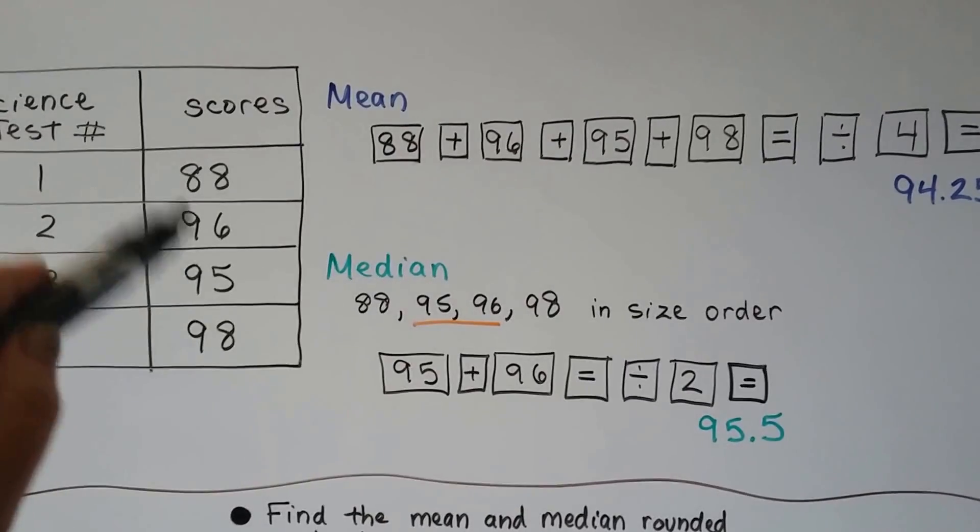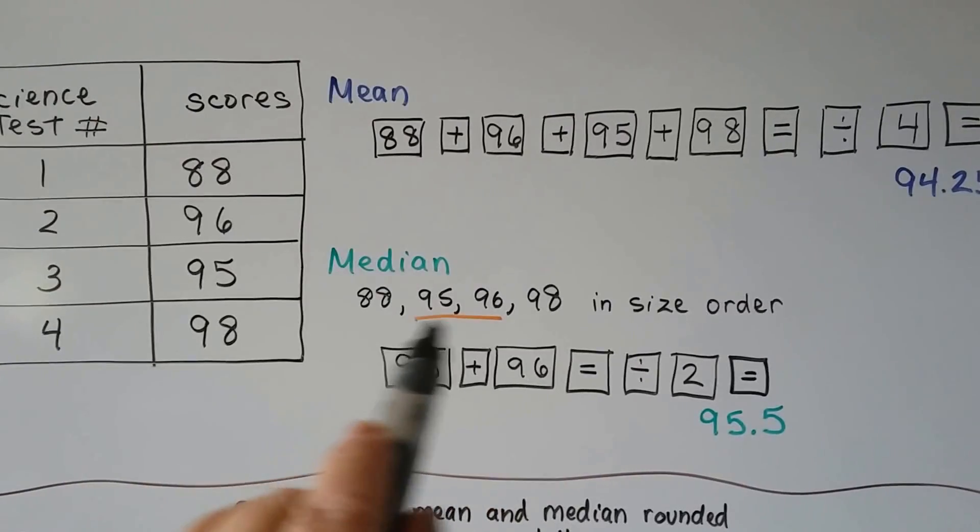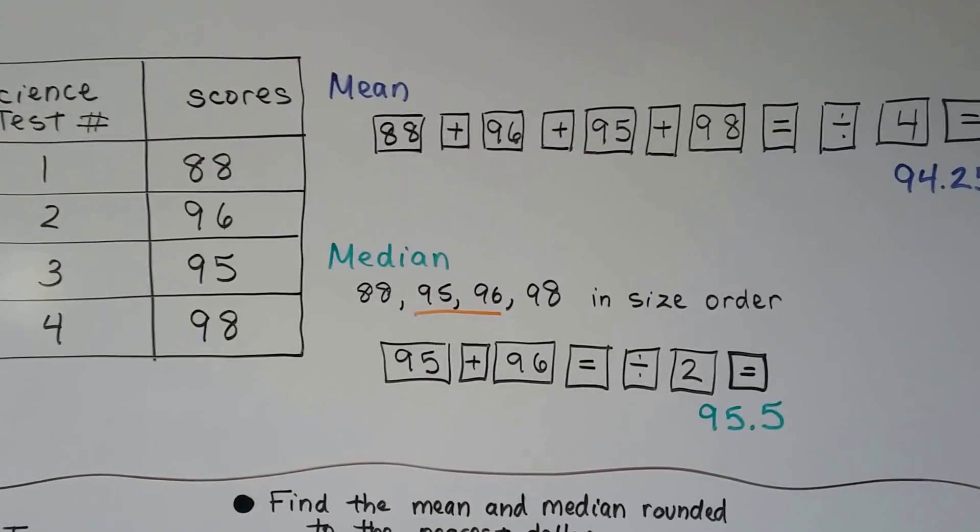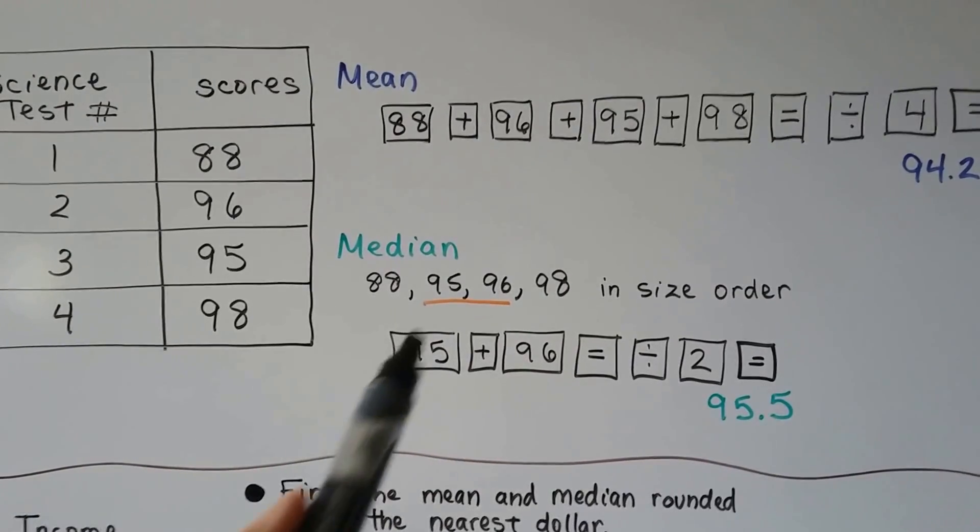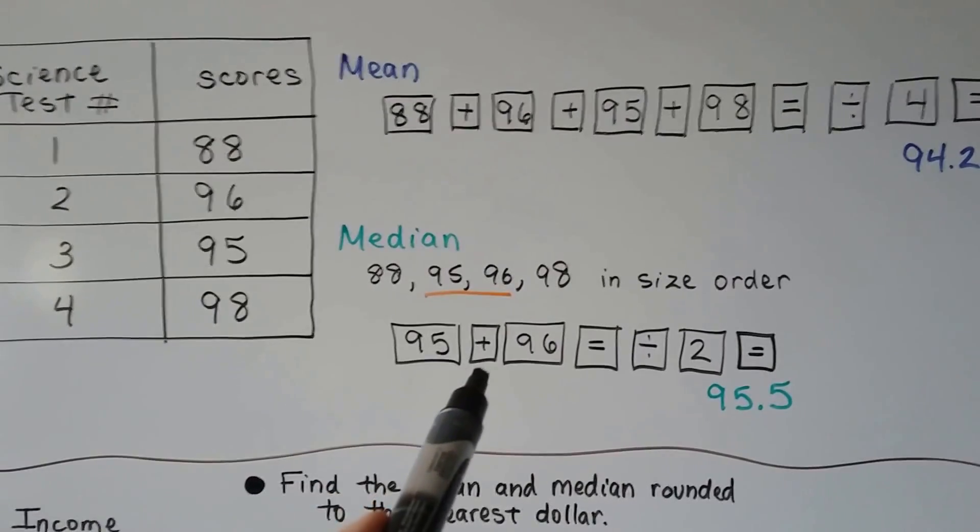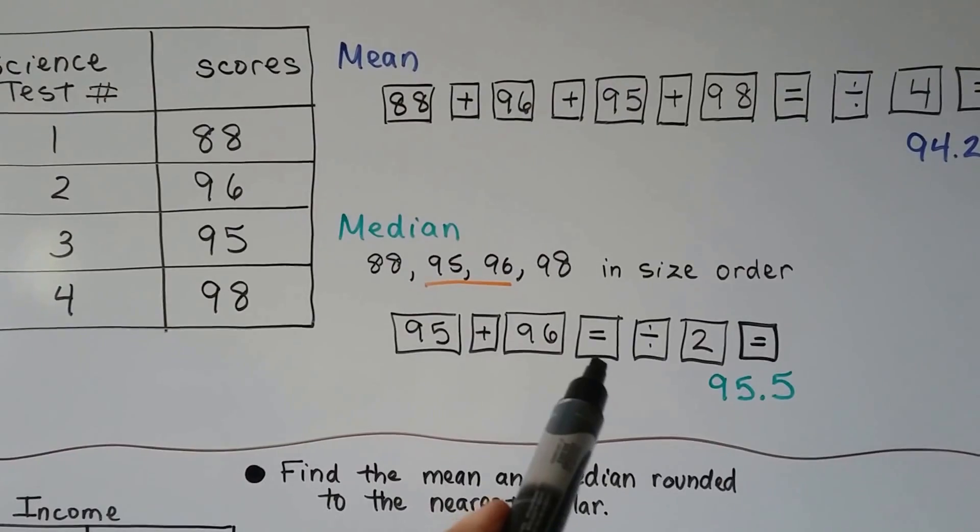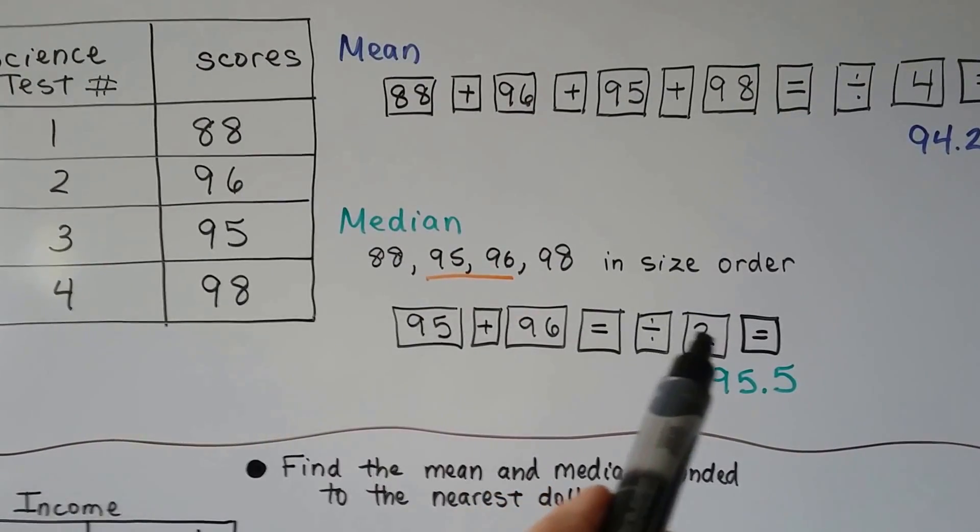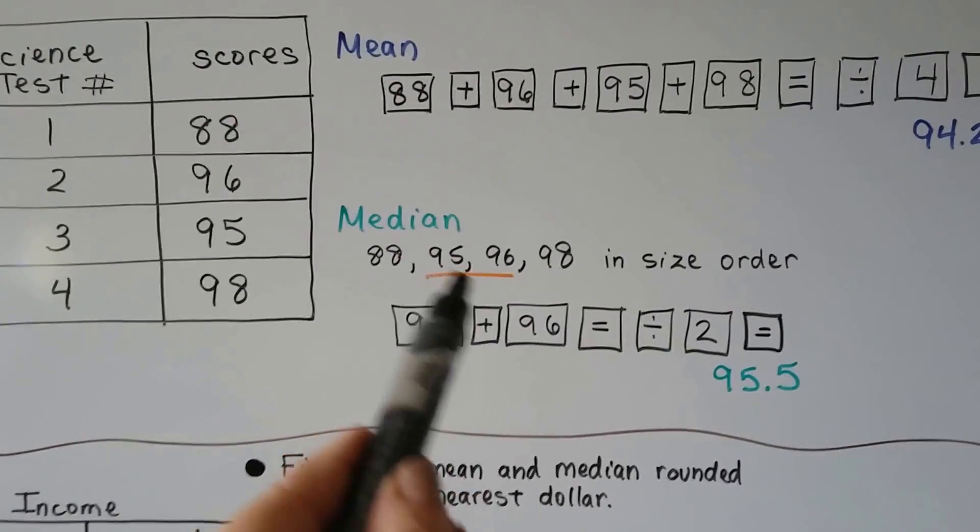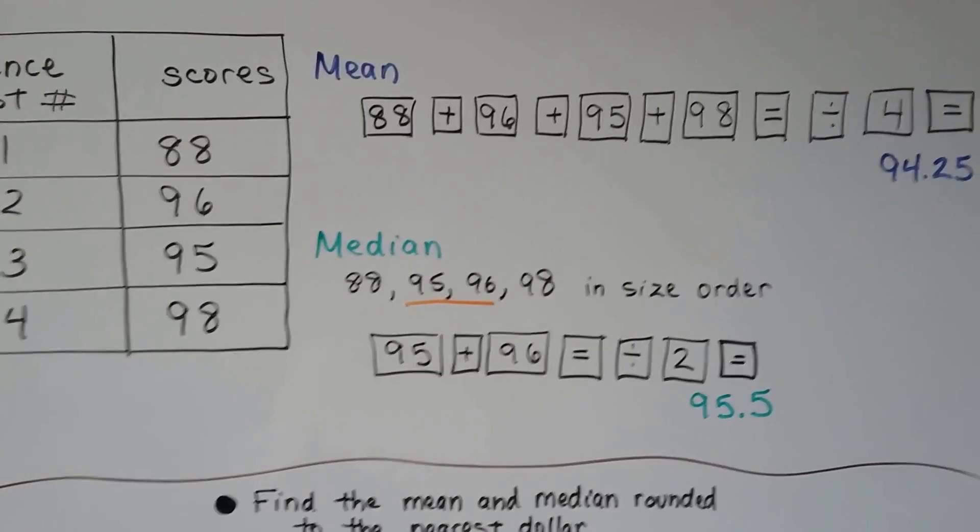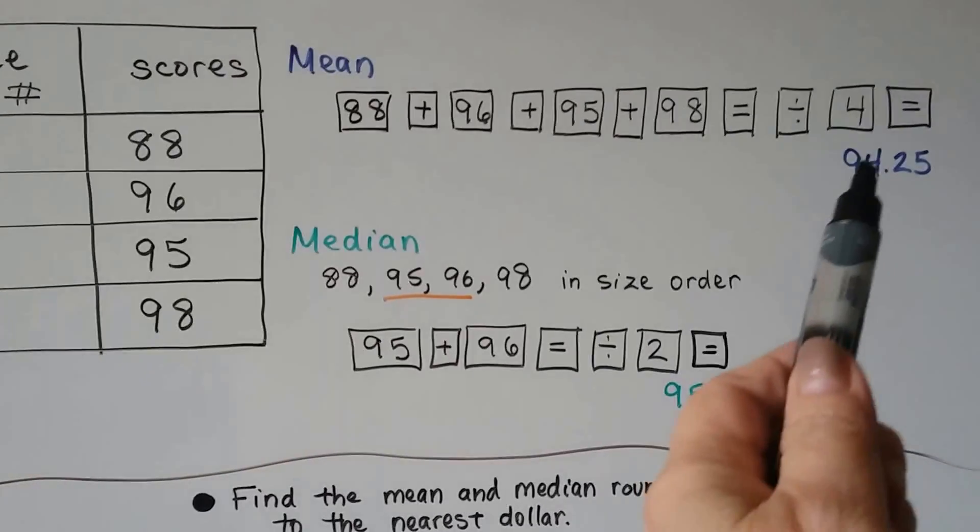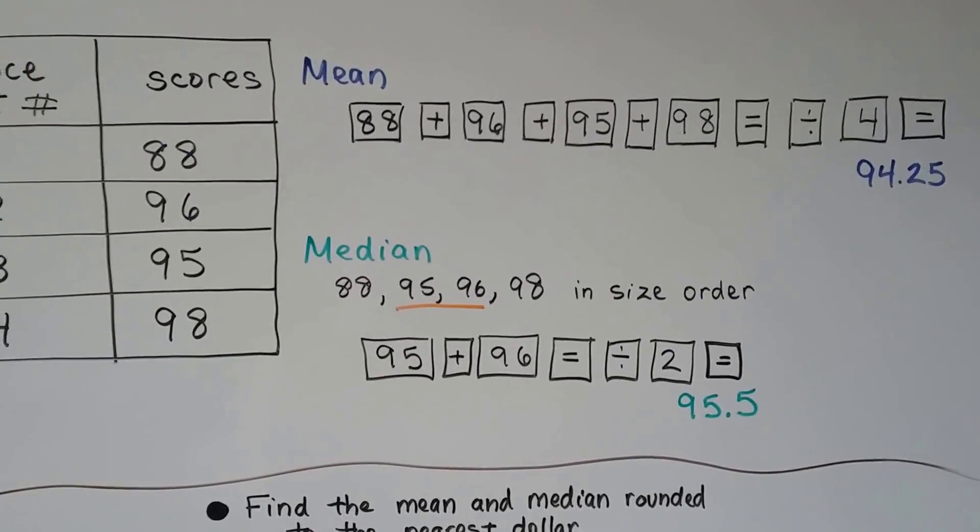The median: these aren't in order, so we can put them in size order, doesn't matter which way, and we see the two numbers in the center because there's an even amount of numbers. We have to add the 95 plus 96, hit equal, and then division sign, and then 2 because there's two numbers. When we hit equal, we get a 95 and 5 tenths. That's different than the mean, isn't it? It doesn't happen all the time. Sometimes it could be the same, and I'll show you that too.